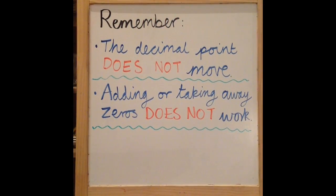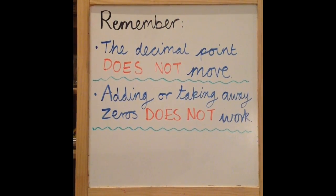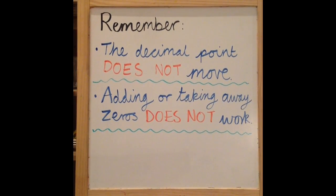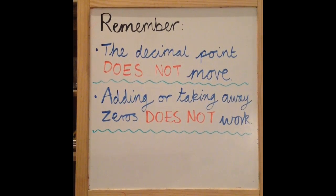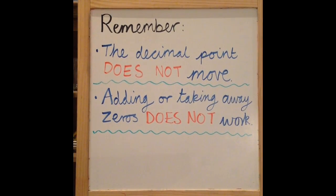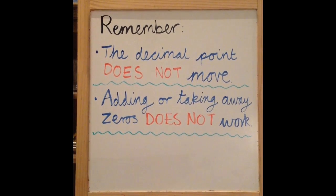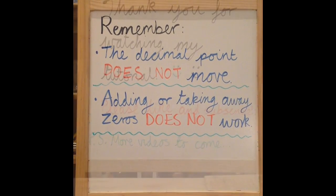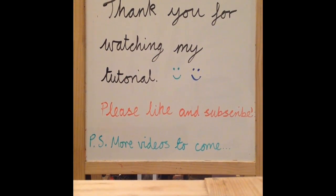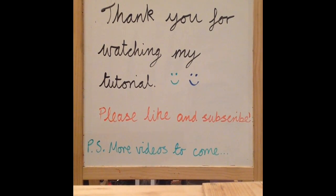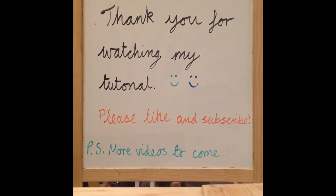Important points to remember: the decimal point does not move. Adding or taking away zeros does not work — the method shown today is the mathematically correct method, and it works for both whole numbers and decimals. Thank you for watching my tutorial — please like and subscribe below. More videos to come!